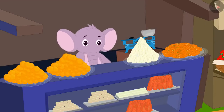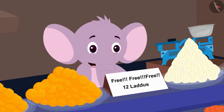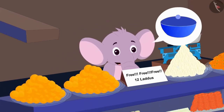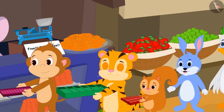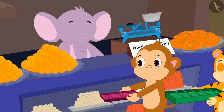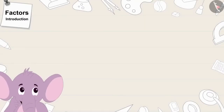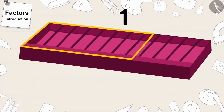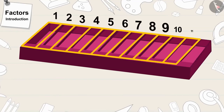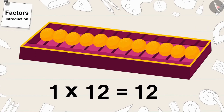Appu has decided to distribute twelve laddus to all the villagers for free today. Appu has asked all the villagers to bring boxes to carry their laddus. The next day, a long queue was formed in front of Appu's shop. Babban first gave his box to Appu. There are twelve slots in a line in Babban's box. Appu is thinking: will twelve laddus fit in Babban's box? There is one line with twelve slots, meaning one times twelve. Twelve laddus will surely fit in Babban's box.